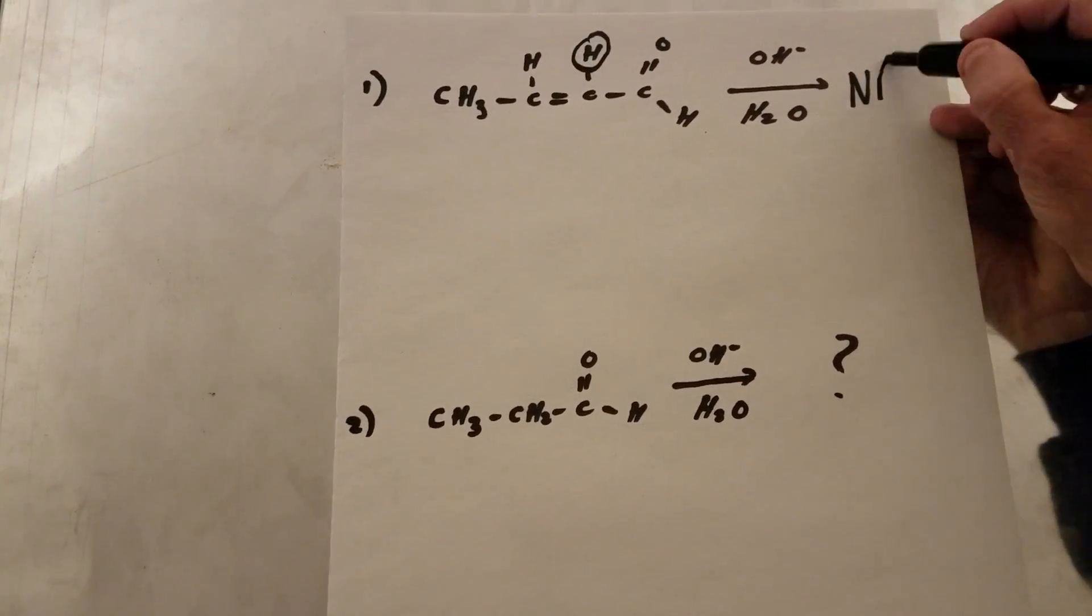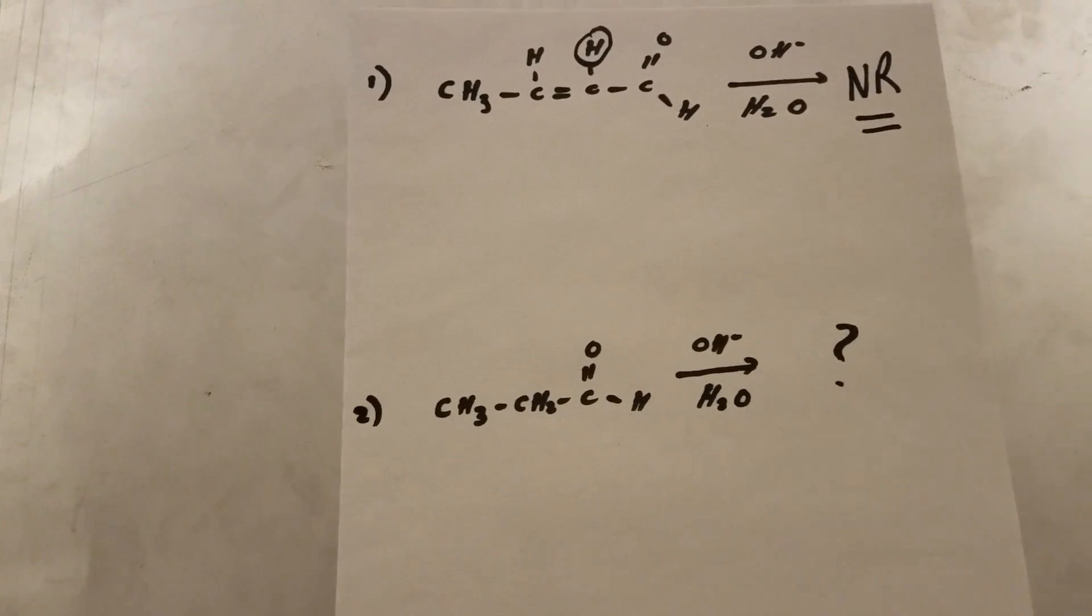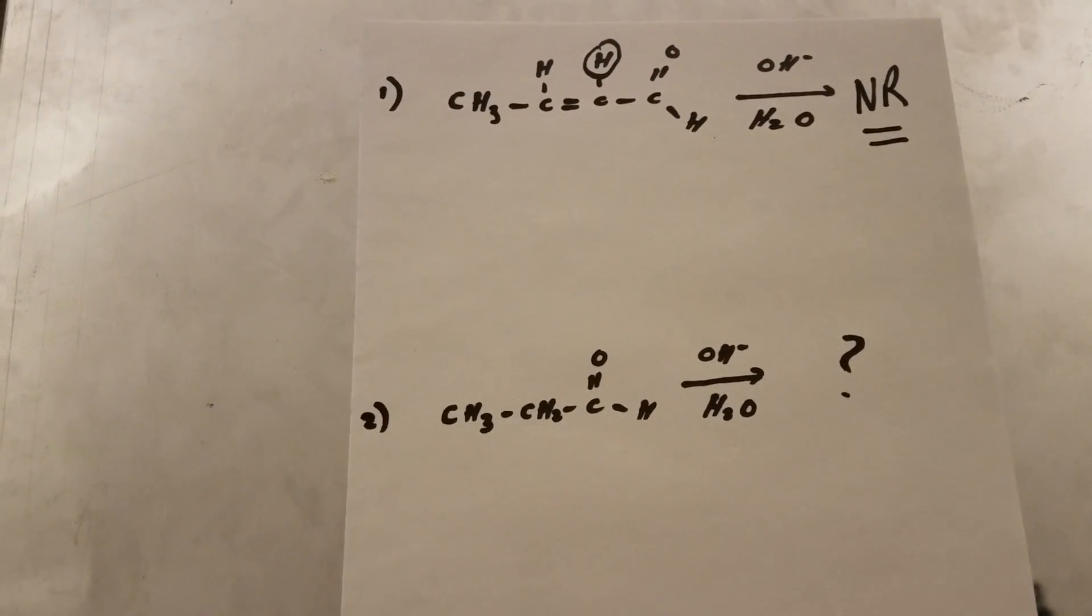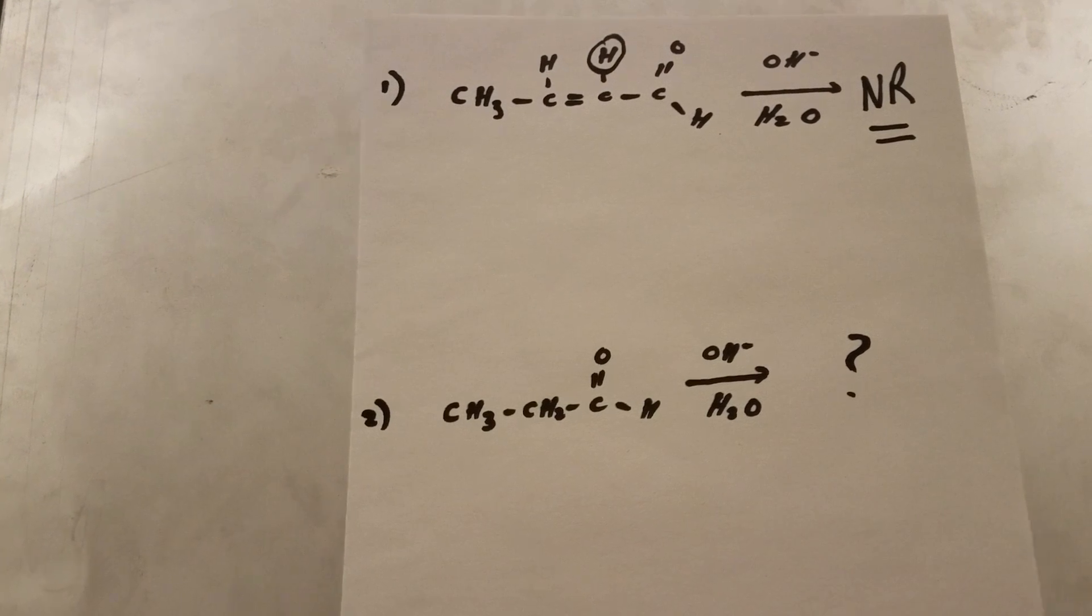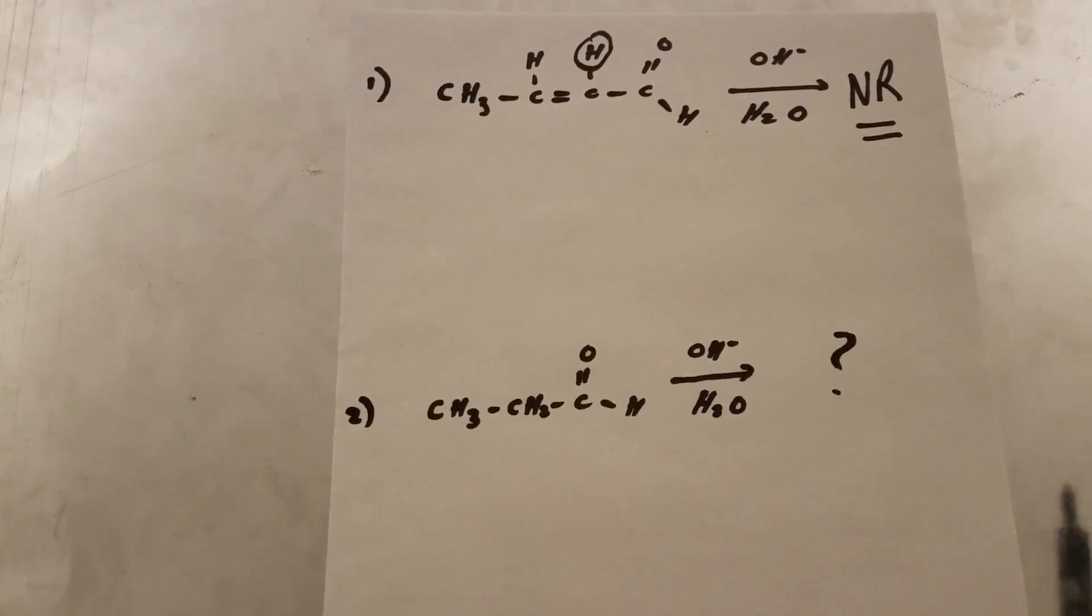So that hydrogen will not come off. So therefore, there's no reaction. You cannot do an aldol and you cannot remove that hydrogen if it's on a carbon, sp2 or sp.